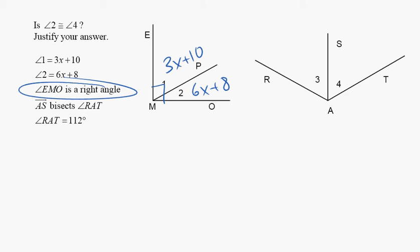We're making a conclusion based on the given information. So we're not assuming it, but we can use that information because they actually told us. So, 3x plus 10 plus 6x plus 8 equals 90.